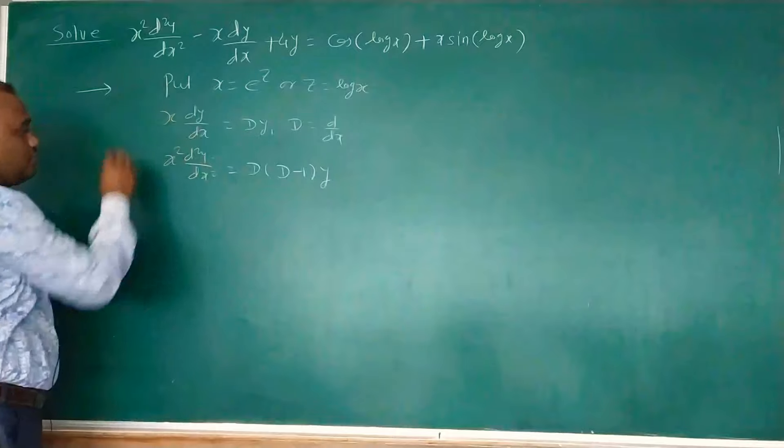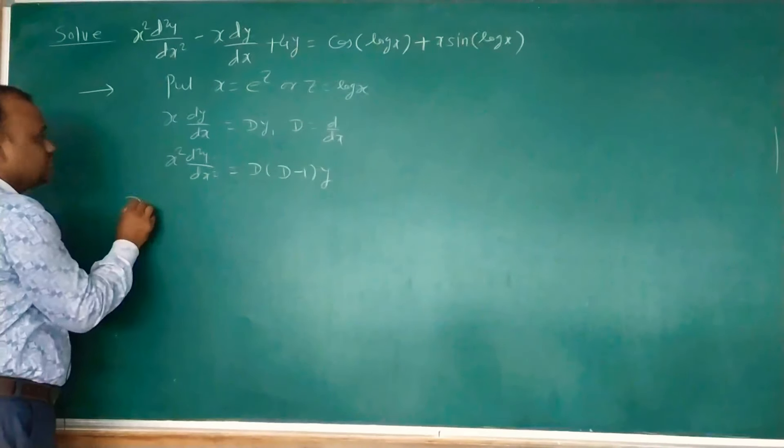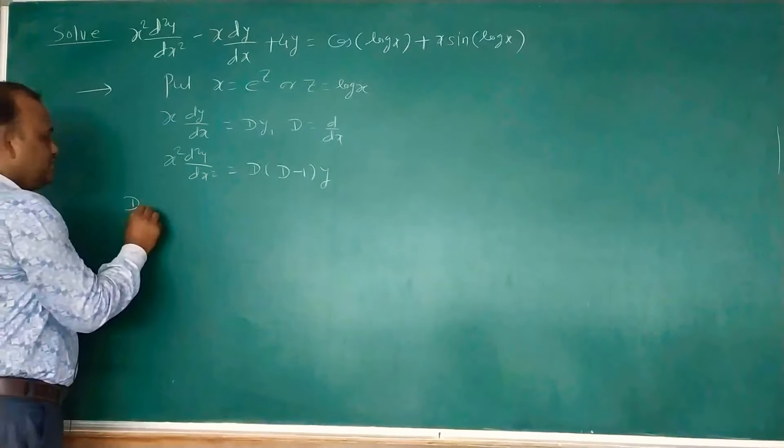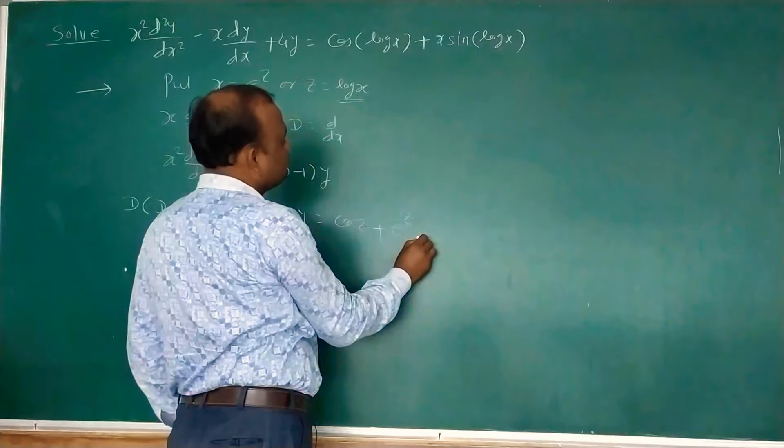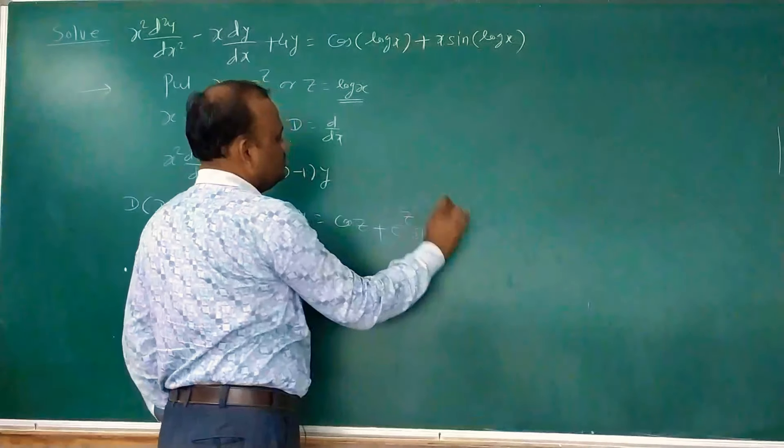Using this substitution, the given differential equation becomes D(D−1)y minus D·y plus 4y equals cos(log x) plus x·sin(log x). Since log x = z and x = e^z, the right-hand side becomes cos z plus e^z·sin z.